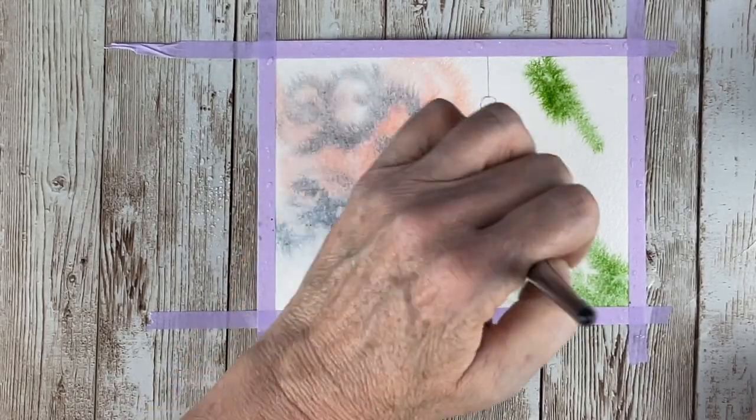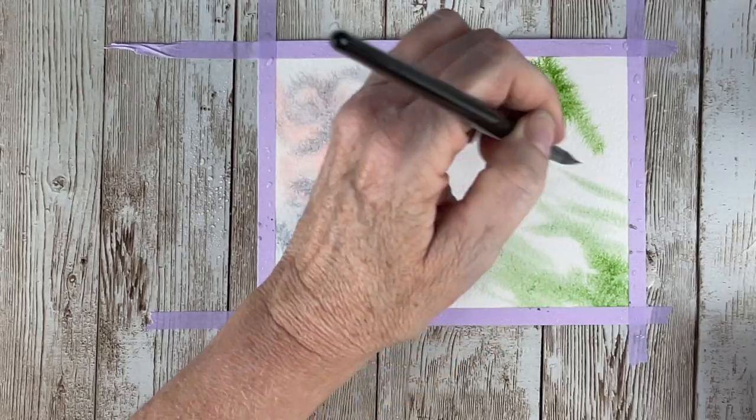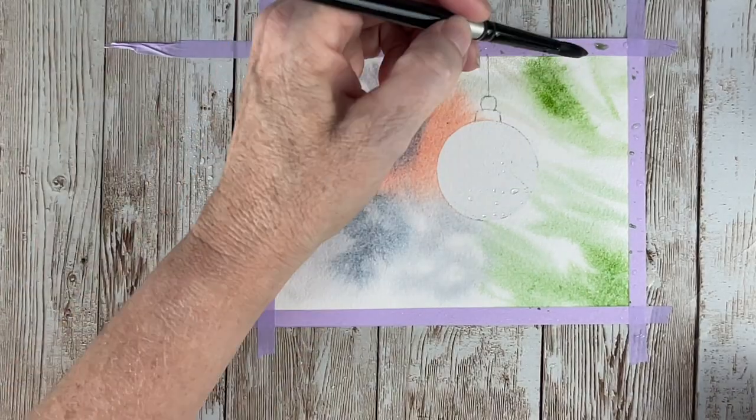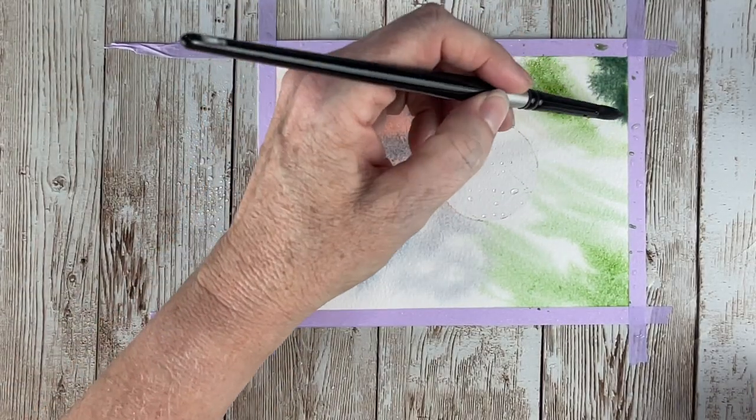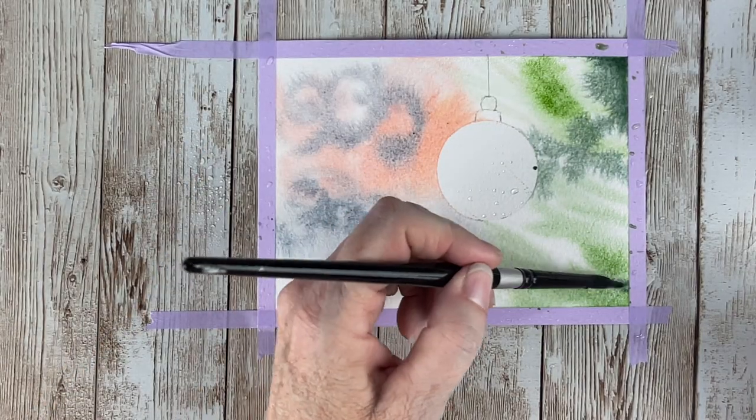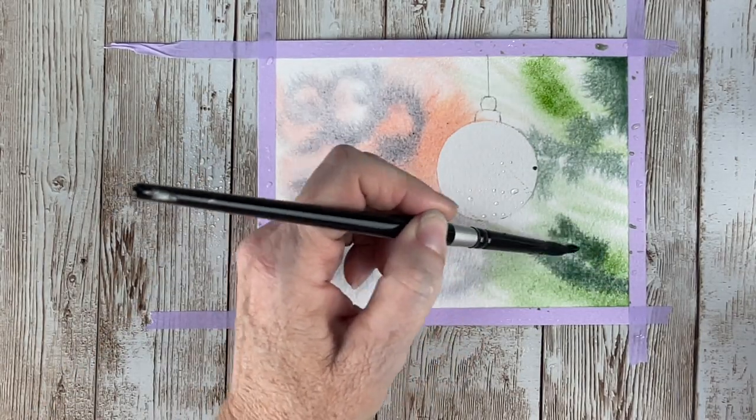With the bokeh background and the bulb, it just was a very easy to do and very cute little Christmas card. I'm using shadow green and I'm just putting in some of the darker underbrushes of the tree, just very loose.